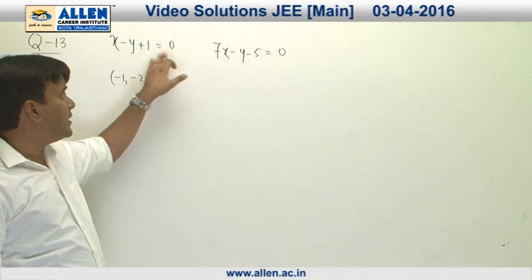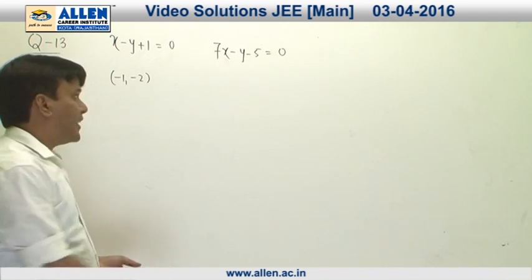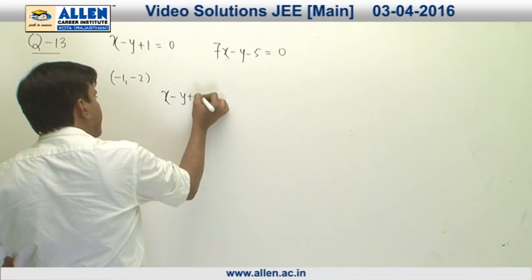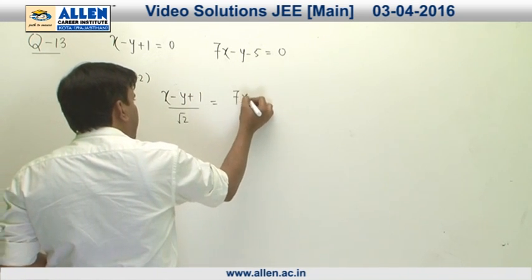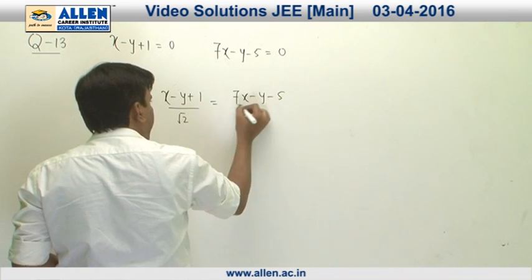First we are computing the angle bisector of these two sides and that will be given by (x - y + 1)/√2 equals (7x - y - 5)/(5√2).